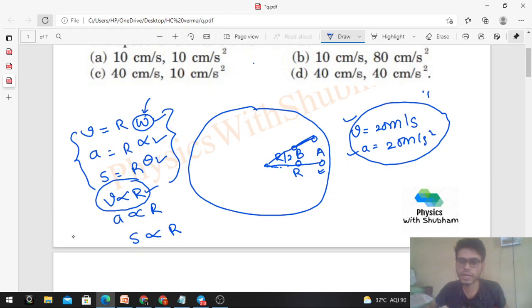Similarly, acceleration will be half. How much is 10 cm per second square?